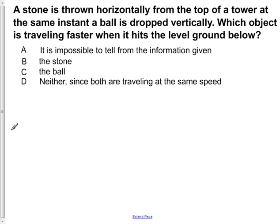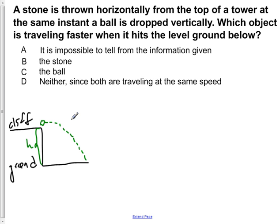If we draw a picture to conceptualize this problem, here we have our ground level and here's the cliff. If we show the stone here in green, this is our stone thrown from this height H. It will follow a parabolic motion as it is thrown horizontally from the top of our tower.